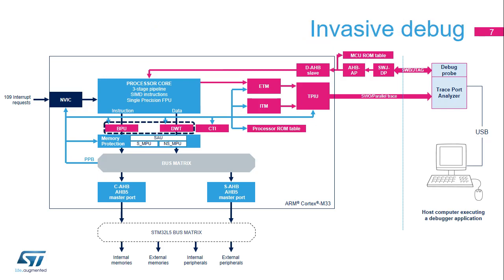Invasive debug halts the processor when a debug event occurs. Two units are involved in invasive debug: the breakpoint unit, or BPU, and the data watchpoint and trace, or DWT.